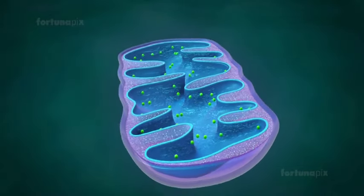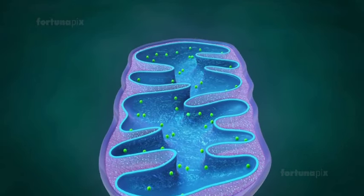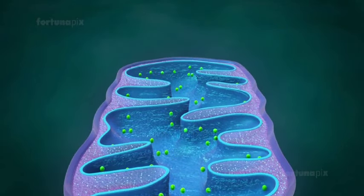Mitochondria are semi-autonomous. They are partially dependent on the cell to replicate and grow.